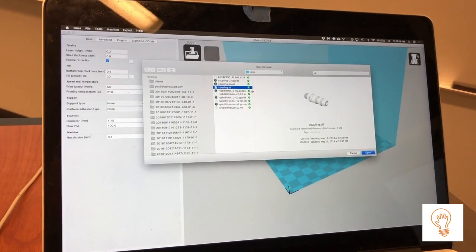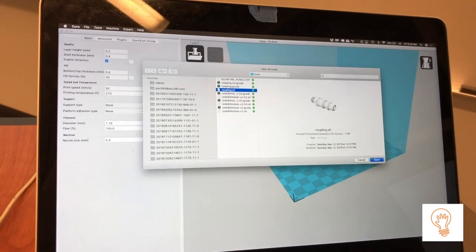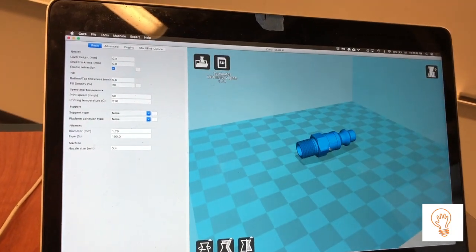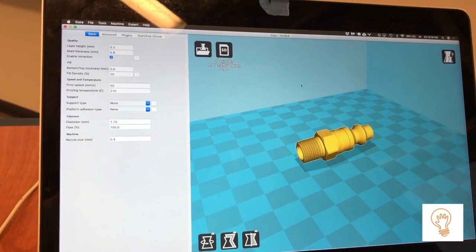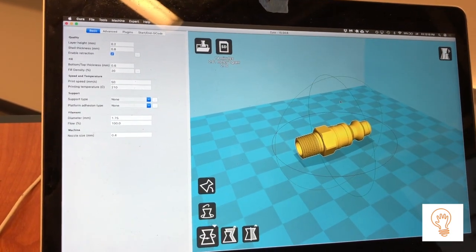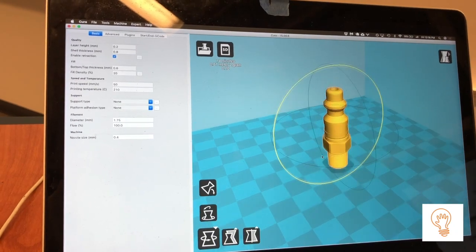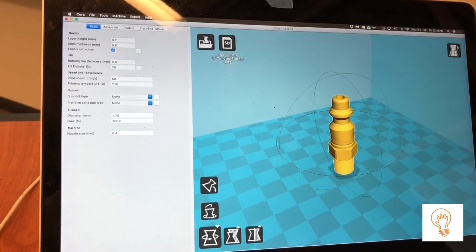We're going to find a part to print. This coupling looks fine. This is the coupler from McMaster-Carr and we're going to rotate it so it prints well. We're just trying to demo how this thing is going to start printing.